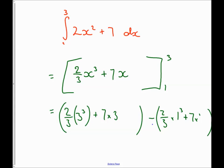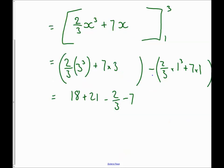Now I can just put this into my calculator. I'll find out that 3 to the power 3 is 27, 2/3 of 27 is 18, so I get 18 + 21 - 2/3 - 7. So I get 39 - 7 is 32 minus 2/3 is 31 and a third.